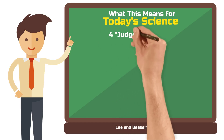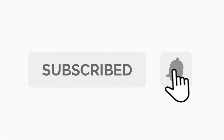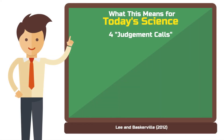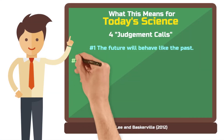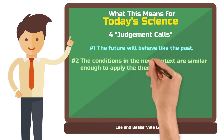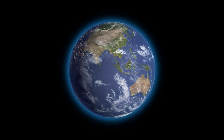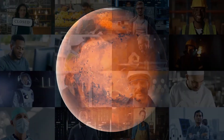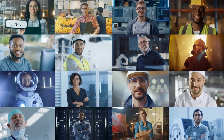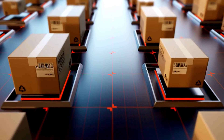Lee and Baskerville define four judgment calls you can make. The first judgment call: the future will behave like the past. The risk here is that a theory or result may no longer be true once applied to a new context. Two: the conditions in the new context are similar enough to apply the theory or result there. Imagine you've determined a natural law on Earth — if you apply it to understand a phenomenon on Mars, you must assume the conditions there are similar enough. This second judgment call must also be made on a smaller scale: if you apply results of a management case study from Amazon to your mid-sized company, you must assume conditions are similar enough to do so.